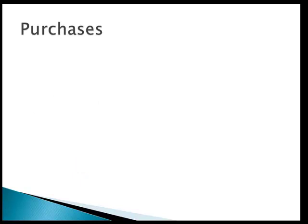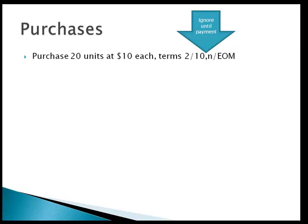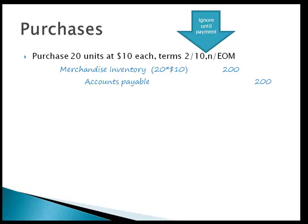We're going to talk about four types of purchasing inventory transactions: the buy, paying for transportation, returns, and making final payment. If we purchase 20 units at $10 each with discount terms 2/10 net end of month, the number one rule is we're going to ignore the discount until we actually make the payment. Whenever there are payment terms, that means we bought it on account. We bought 20 units at $10 each — inventory is an asset, so it goes up. It's a debit to merchandise inventory for $200, and a credit to accounts payable for $200.